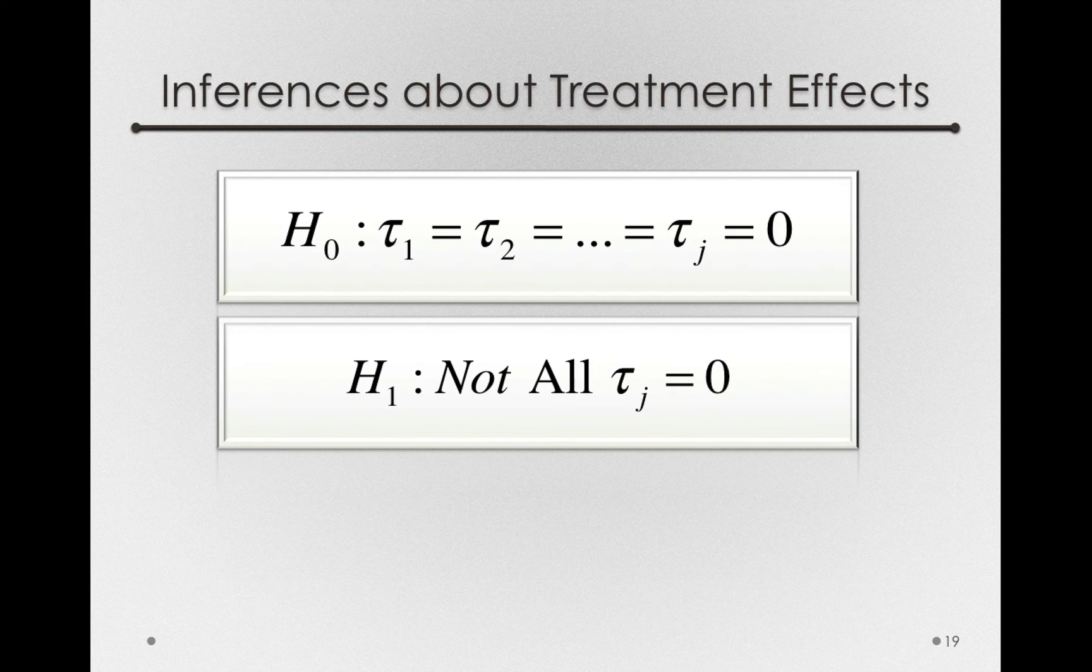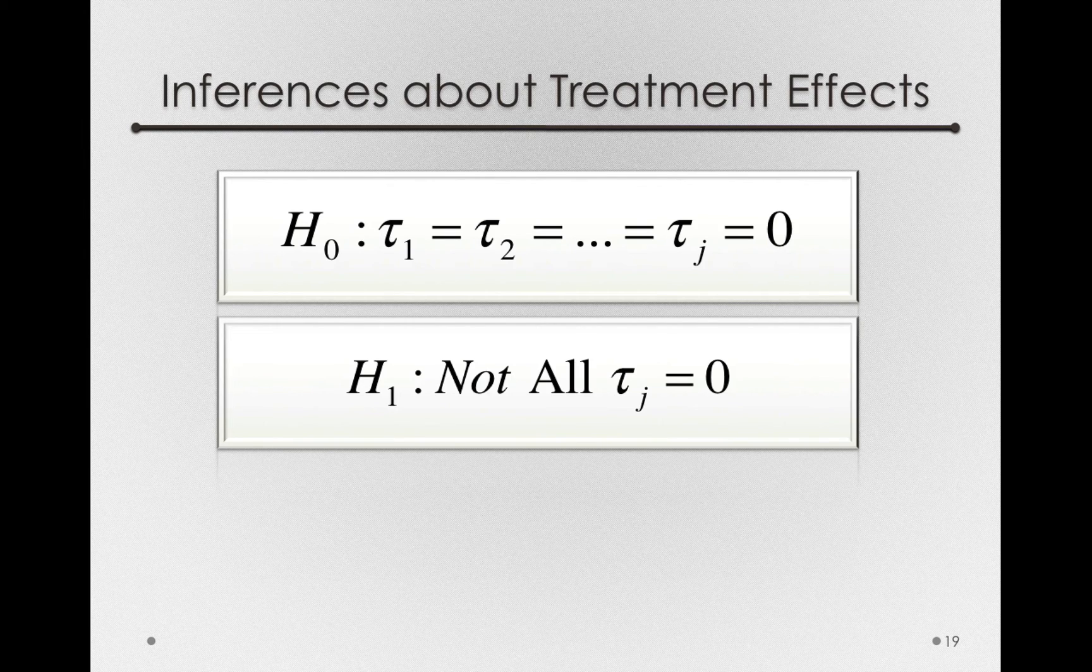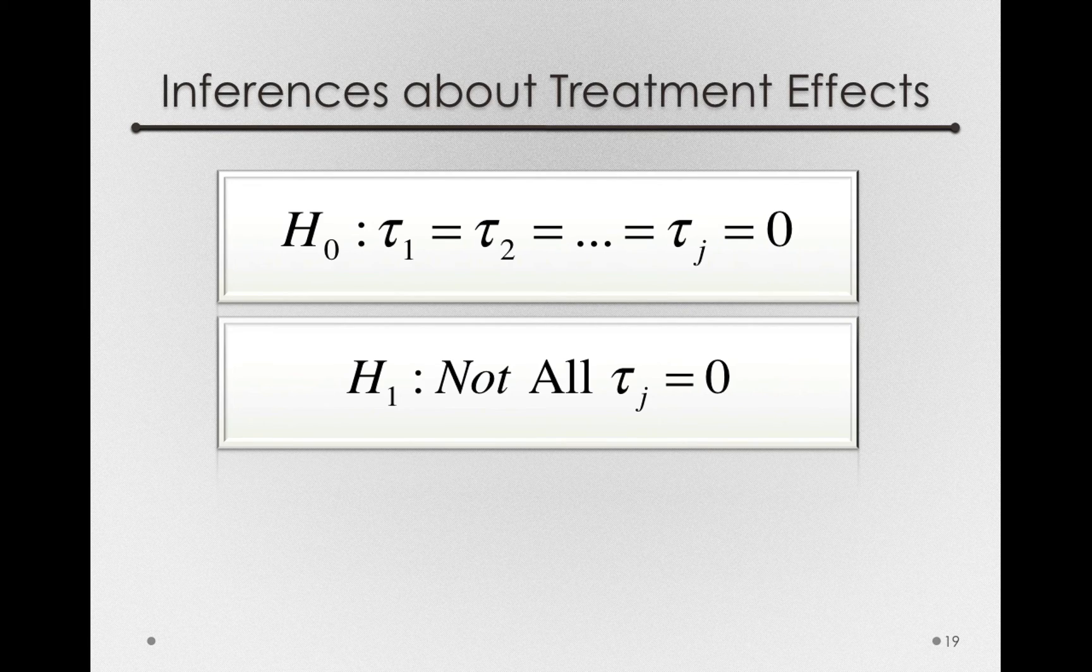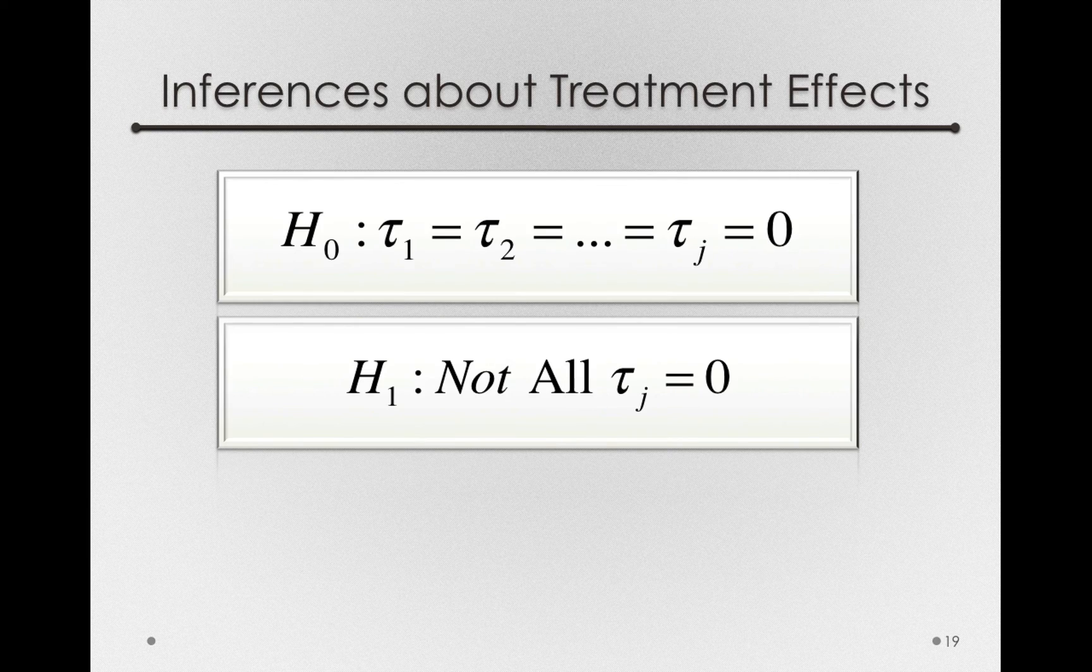So in essence, if we can test the variance of the taus, we can figure out whether we think the population taus are different from zero or not on the basis of sample data. And the way we're going to do that is to form our test statistic as a ratio of variances.